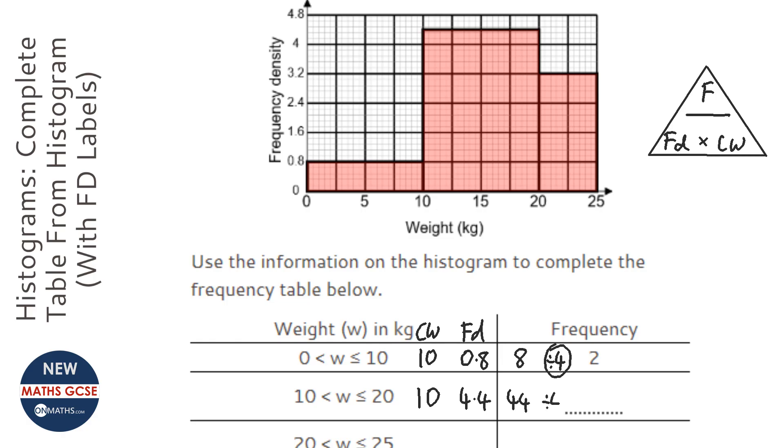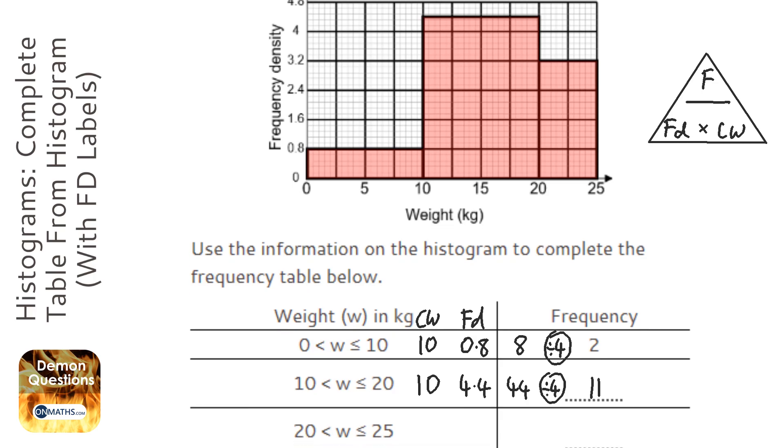Divide it by 4, which gives me 11. For the last one, you've got to be careful because the class width isn't always the same with histograms - it's 5, the frequency density is 3.2. So 5 times 3.2 gives me 16, then divide it by 4, which gives me 4.